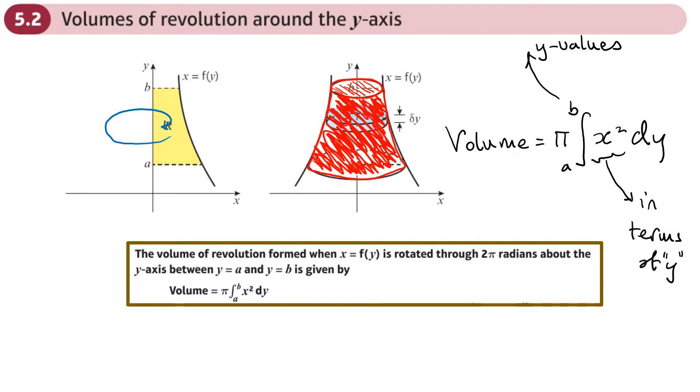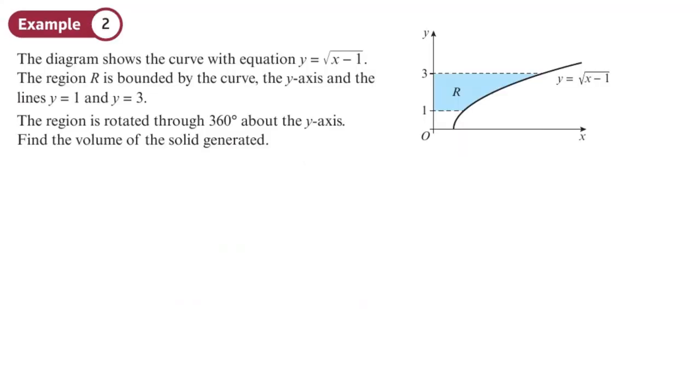Here we've got a curve with that equation, and we're given the y limits, which is nice. We want to work out the volume, so the first thing is we need an expression which is x equals rather than y equals. We've got y equals square root of x minus 1. If we square both sides, we get y² equals x minus 1, so making x the subject: x equals y² plus 1.